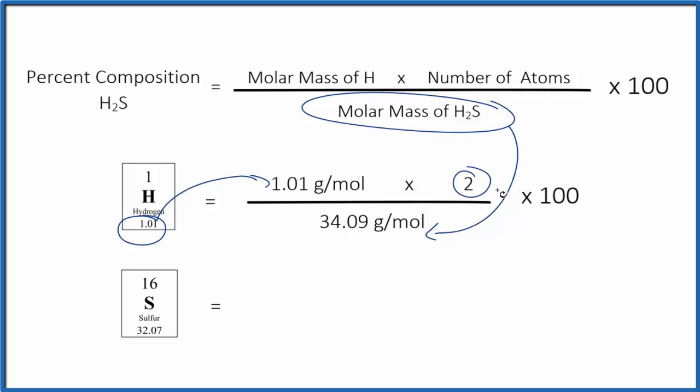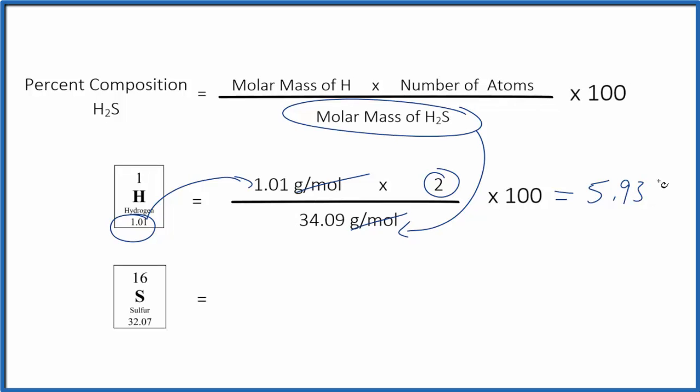So 1.01 times 2, then we get that number divided by 34.09. Grams per mole cancels out. Multiply by 100 to get a percent, which is 5.93%. So that's the percent composition for the hydrogen in H2S.